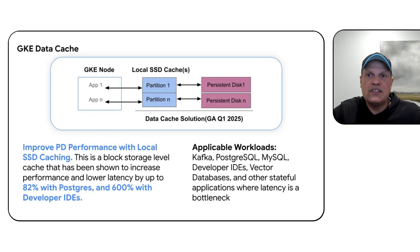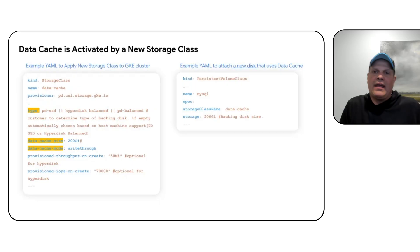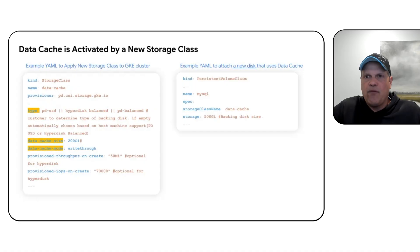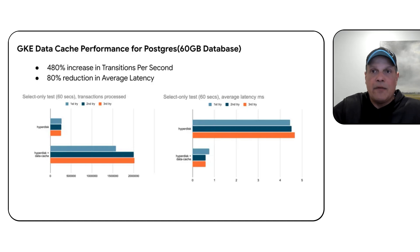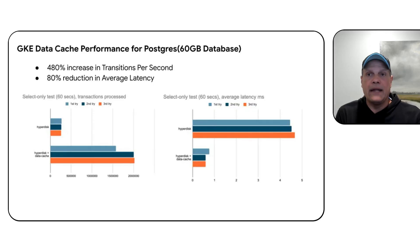We've also been working hard on storage, for both stateful workloads and AI/ML. A really interesting feature is GKE Data Cache, which allows GKE to manage a set of local SSDs acting as a cache for persistent disk. Previously, users had to manually configure this by mounting local SSDs. We've now made this automatic through configuration. Early results have been amazing: we've seen up to 82% improvement in performance and latency for Postgres workloads, and up to 600% improvement for web-based IDEs on demand on GKE. It's configurable in your YAML — give it a try.